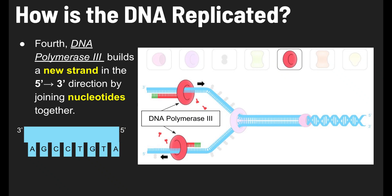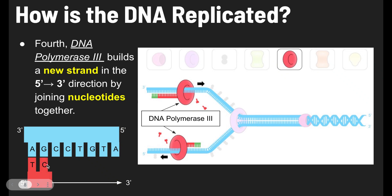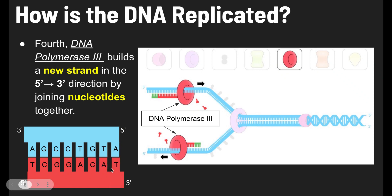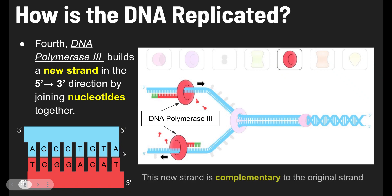As DNA polymerase adds bases moving in the five prime to three prime direction, you place T opposite A, C opposite G, then G, G, A, C, A, T. The resulting new strand is called the complementary strand — it's complementary to the original strand. A pairs with T, and G pairs with C.